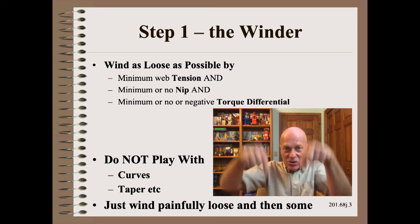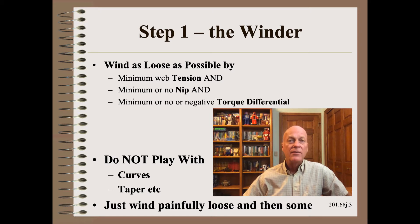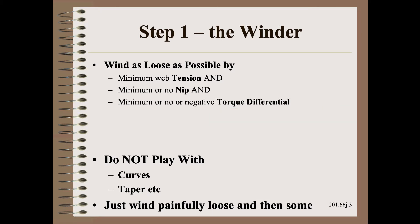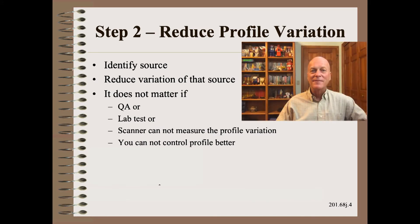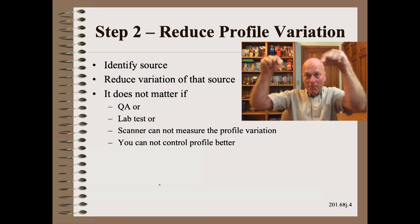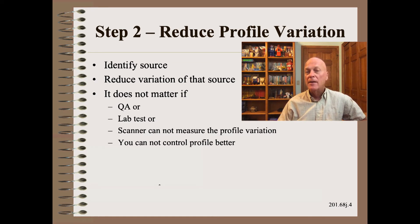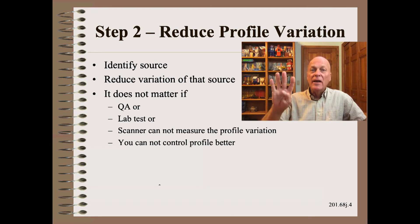Wind loose and then move upstream. If winding as loose as the system allows does not get you far enough, then winding super loose may not be enough. You must then go to step two to make any further remedy. Step two is simple in concept: you must reduce the streaky web profile variation at its source.